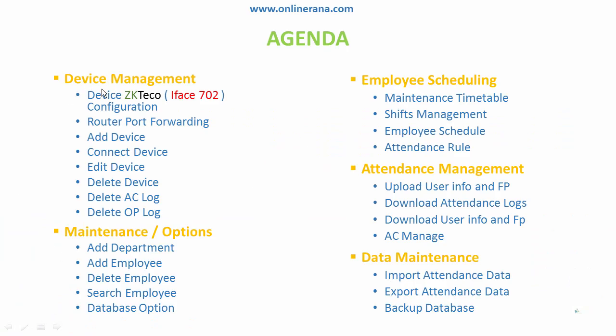We will cover device management in the software. We will configure the ZKTeco WiFi 702 device and also handle router port forwarding, because this machine will be behind our DSL router or any router. There is NAT involved, so we have to forward some ports.